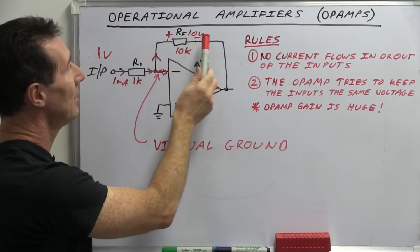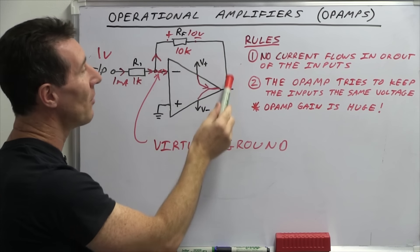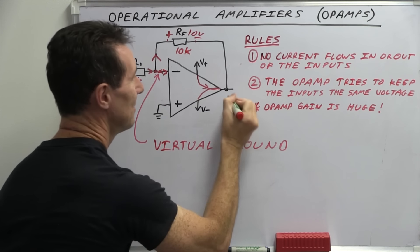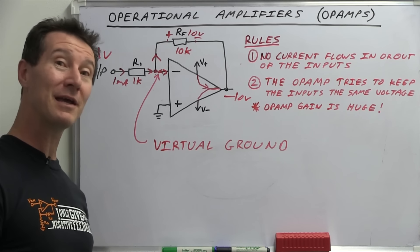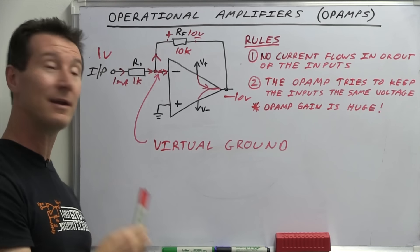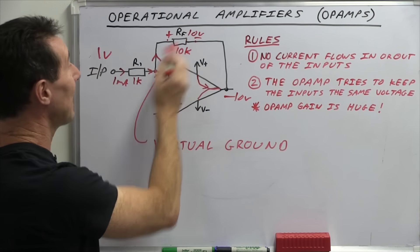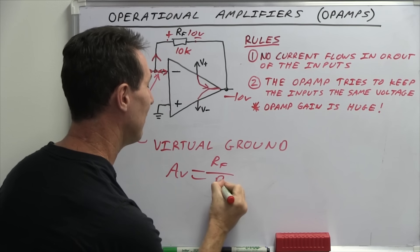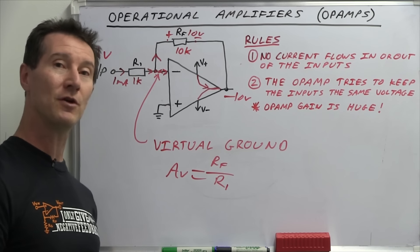And there's what's called a virtual ground. So if this is ground and this side is positive, we've got minus 10 volts coming out of here. Bingo — there's our inverting amplifier. One volt in, minus 10 volts out. So our gain formula: AV equals RF over R1. There is no plus one with the inverting amplifier — the plus one only applies to the non-inverting configuration.